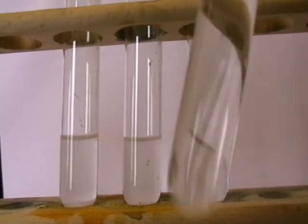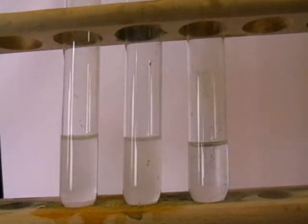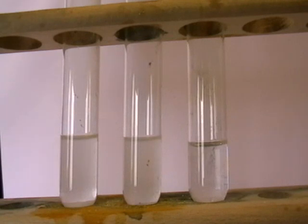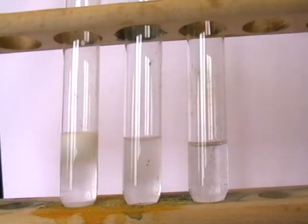I'm going to add now the acidified aqueous silver nitrate to each of these in turn. First of all, the one on the left here is sodium chloride solution. Just one or two drops to begin with. And you should observe there the formation of a white precipitate.